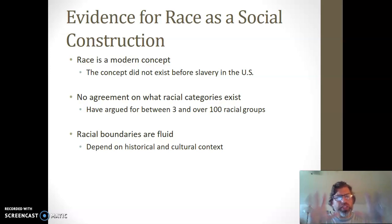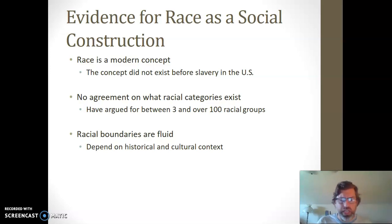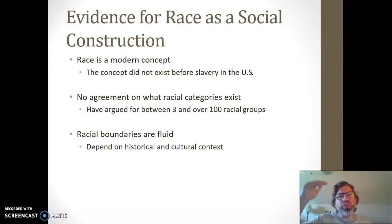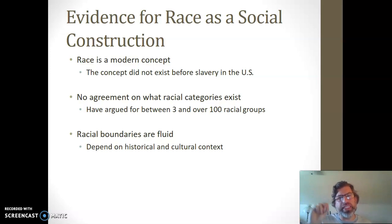So those are three pieces of evidence we can use to confirm our hypothesis that race is a social construction. What I want to do in the remaining time is use the U.S. Census and the evolution of the U.S. Census to see all three of these things happening.